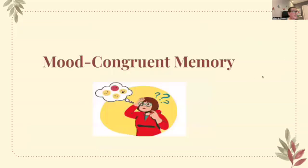Now we're going to look at mood congruent memory. Mood congruent memory is the tendency to recall information that is congruent with one's current mood. So for example, if a person is feeling sad, they're more likely to recall other sad events, which can influence their behavior and decision making. Similarly, being happy makes you better at remembering past happy events. Basically, your mood affects what you remember.